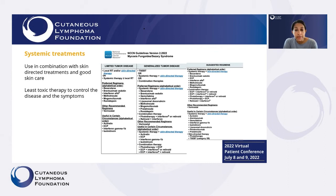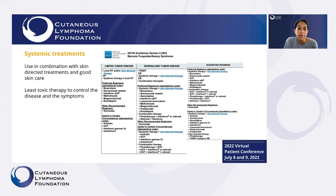There are a wide variety of systemic treatments that can be used, still in combination with skin-directed treatments and with good skin care. When choosing these treatments, we're choosing the least toxic therapy possible — with the fewest side effects — to control the disease and the symptoms. There are a wide variety of options from the National Comprehensive Cancer Network guidelines for treating these lymphomas, and it's really about choosing what's best for the specific patient, taking into account what their lymphoma is doing, how the patient's feeling, and any other medical conditions the patient may have.